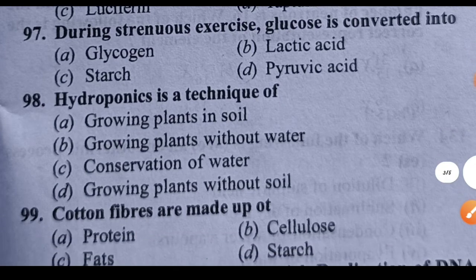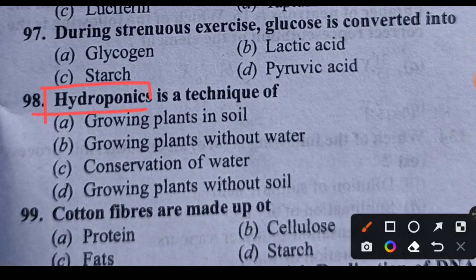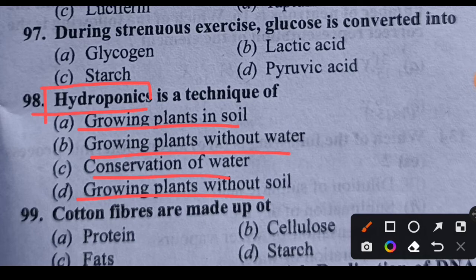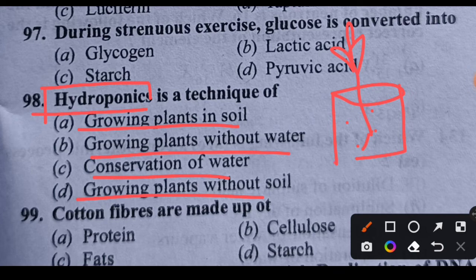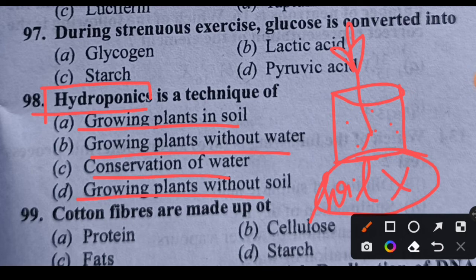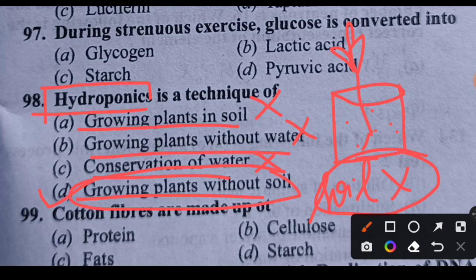Question 98: Hydroponics is a technique of what? Options: growing plant in soil, growing plant without water, conservation of water, or growing plant without soil. Hydroponics is a technique in which we grow plants in a nutrient solution — a soil-less culture. We put the plant in a beaker with nutrient solution. Soil is not needed. Hydroponics is also called soil-less culture. Option D is the right answer.